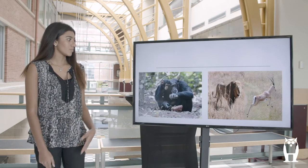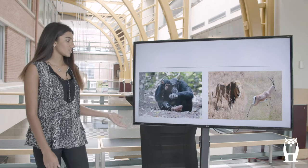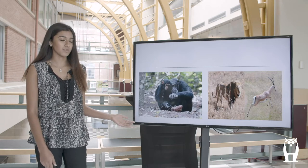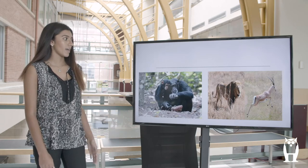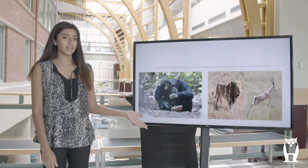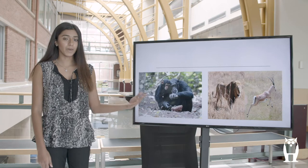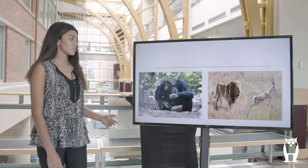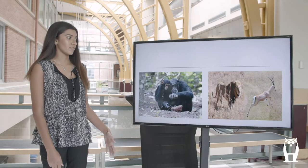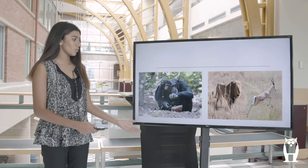For example, these are two instances where that's possible. The first is a baby chimpanzee learning how to use tools from its mother, and the second is a lion hunting. A lot of baby lions learn how to hunt for their food by watching their parents. These are just two instances of how observational learning can be beneficial for survival in the wild.